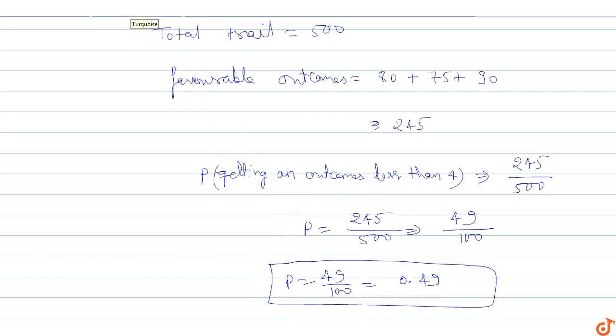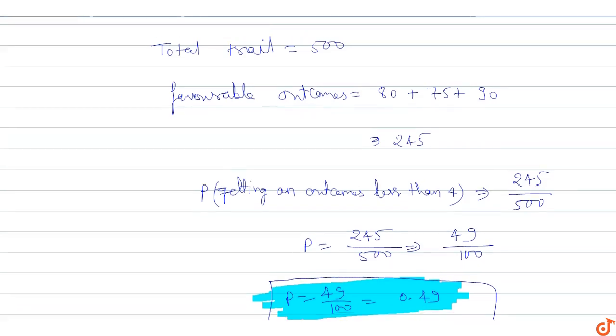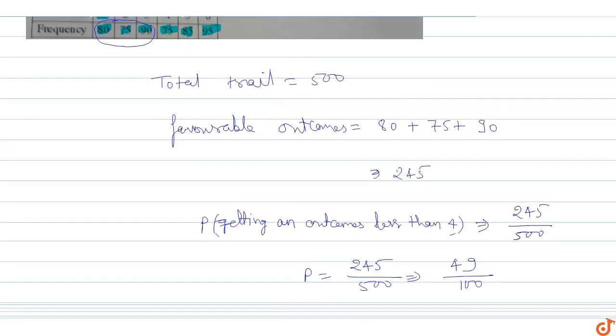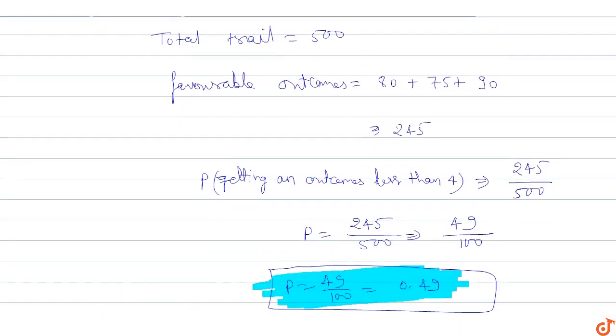The probability of getting an outcome less than 4 comes out to be 0.49. This is the answer for this question where we have the probability of getting an outcome less than 4 when a dice is thrown 500 times.